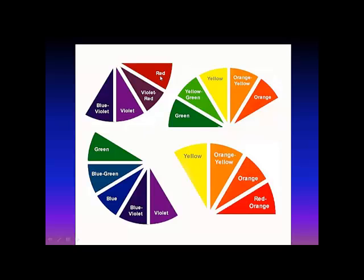So everything here that I'm highlighting — blue, violet, violet, violet-red — that is really a cool shade. And green, blue-green, blue, blue-violet — this is a cool shade. Obviously the ones on the opposite side are considered more on the warm side. Although yellow, green, and green can make it more neutral, just as red can make the top one a little more neutral.